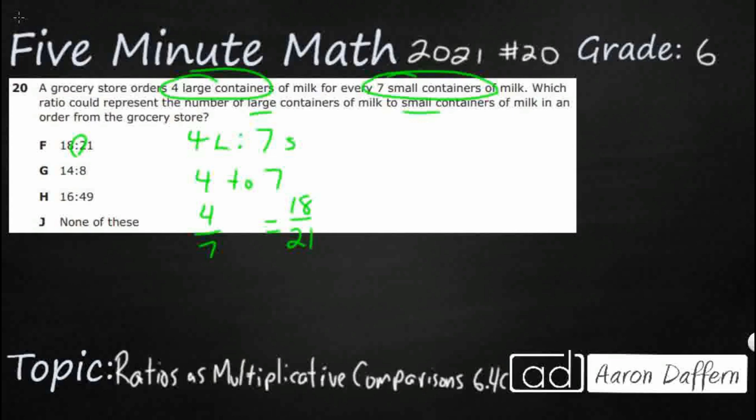As long as we've got the large on top and the small on the bottom, that's fine. We think, how do we multiply to get from 4 to 18 and from 7 to 21? Because if we multiply by something that's equal to 1, like 2 halves, 3 thirds, 4 fourths, 5 fifths, then we're good. That's an equivalent ratio.